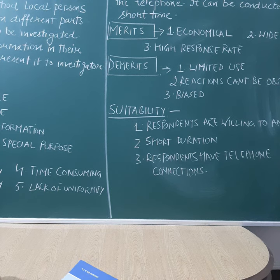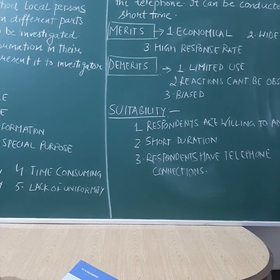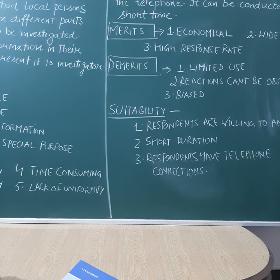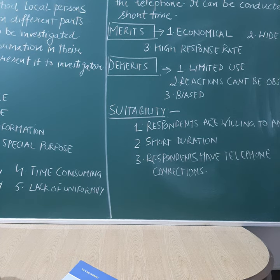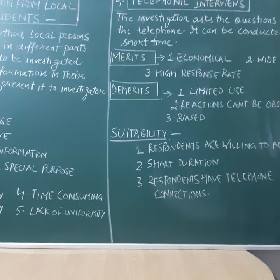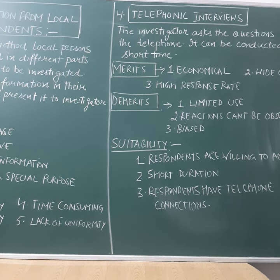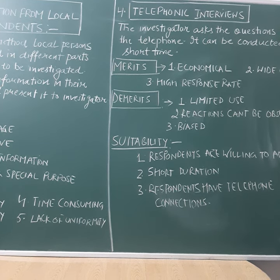Also, if you need data quickly in a short duration, the best method is to call different people and record the data. This method is applicable when the people from whom you want to collect data have appropriate telephone connections. That is all for today — tomorrow we will cover the last method to find primary data and then the methods to find secondary data. Thank you.